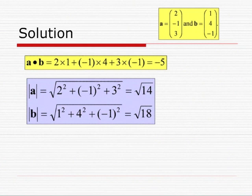Then we calculate the length of A and B. The length of A is the square root of 2² + (-1)² + 3², which is the square root of 14. And the length of B is the square root of 1² + 4² + (-1)², which is the square root of 18.